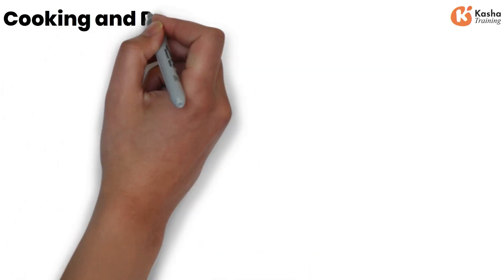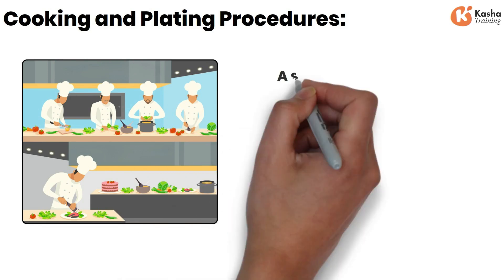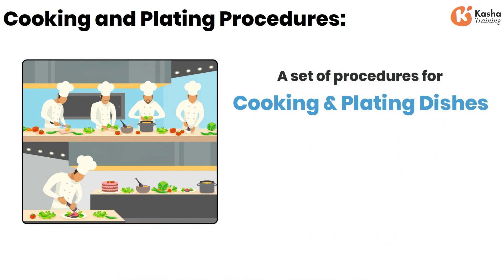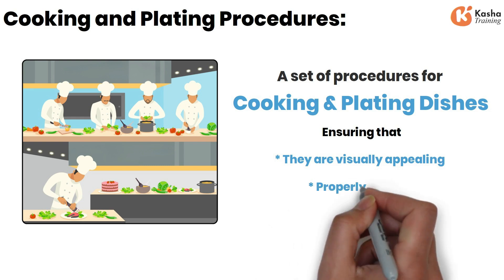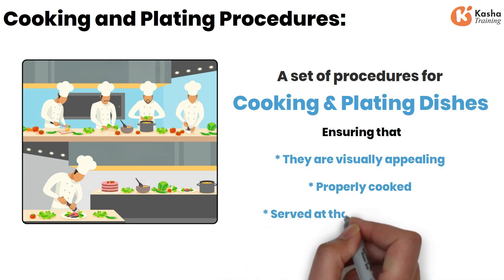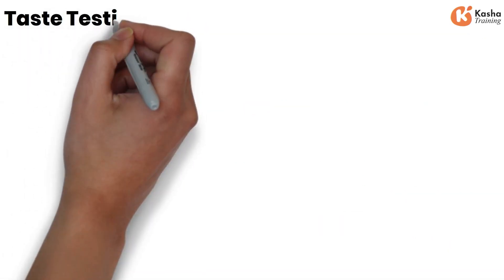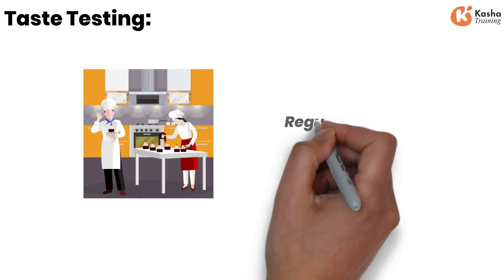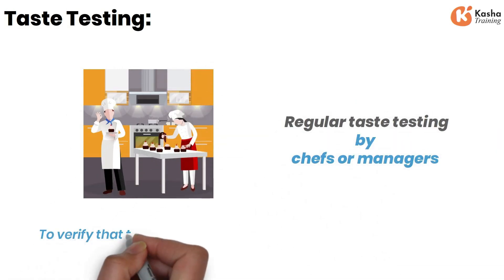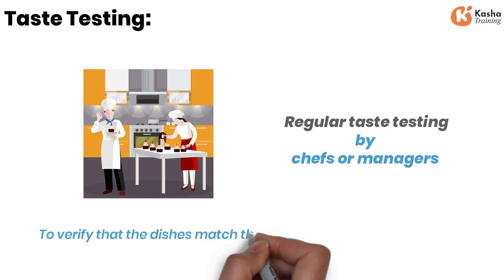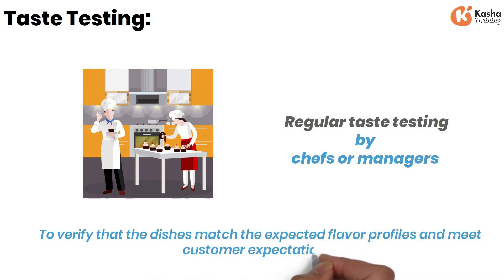Cooking and Plating Procedures: the kitchen follows a set of procedures for cooking and plating dishes, ensuring that they are visually appealing, properly cooked, and served at the right temperature. Taste Testing: the restaurant may implement regular taste testing by chefs or managers to verify that the dishes match the expected flavor profiles and meet customer expectations.